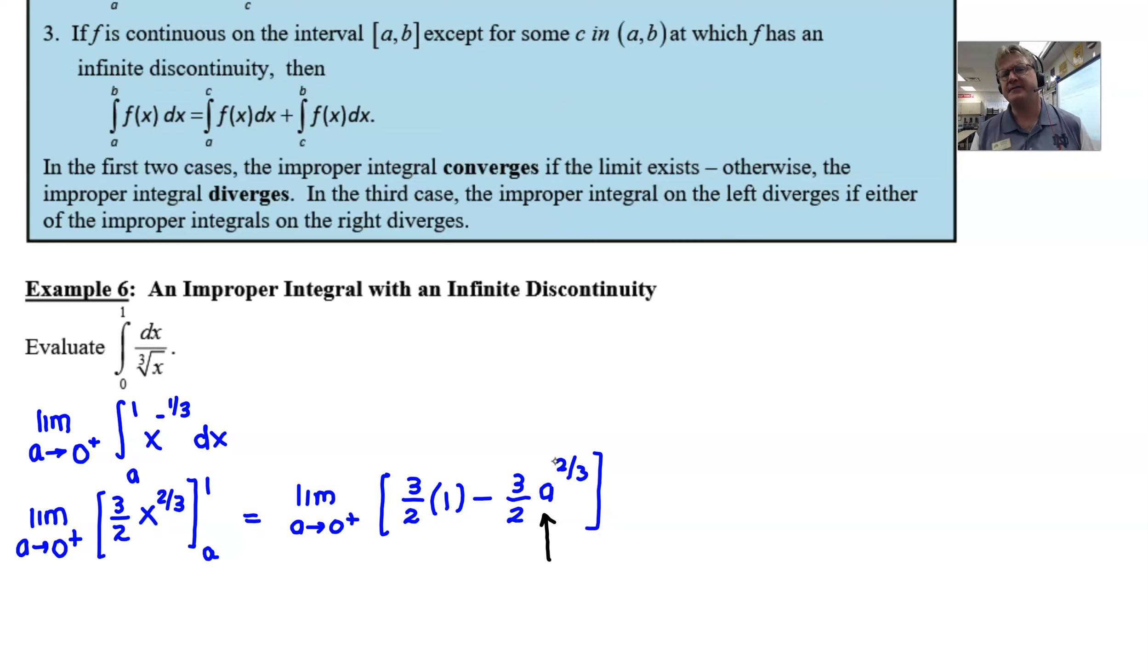Multiplying him by three halves is not going to make much difference. And so basically, this whole thing is going to approach zero. So when all is said and done, this limit is going to be three over two.